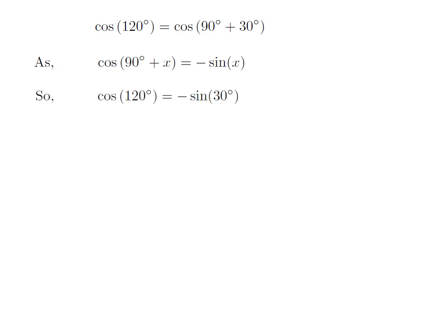Let us apply the above identity for cosine of 120 degrees. Here, x is 30 degrees. So, cosine of 120 degrees is equal to minus sine of 30 degrees.